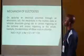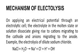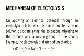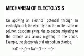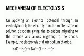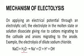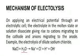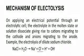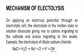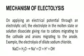The next aspect we'll be looking at is the mechanism of electrolysis. On applying electric potential through an electrolytic cell, the electrolyte in the molten state or solution dissociates, giving rise to cations that are positively charged migrating towards the cathode, and anions that are negatively charged migrating towards the anode. For example, in the electrolysis of dilute sodium chloride: sodium chloride in solid state cannot conduct electricity because there are no mobile ions. Adding water and making it into solution causes dissociation into sodium ions, chloride ions, hydrogen ions, and hydroxyl ions. Two positive ions go to the cathode and two negative ions go to the anode.